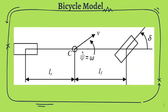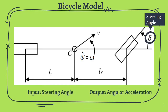This model depicts the most fundamental bicycle model. It makes many assumptions, with the two most important being that the model only moves in the xy plane, and that the steering angle delta is very small. This is a reasonable assumption since if one were to turn the steering wheel too sharply then the system would become automatically unstable. The input will be the steering angle, and the output will be the angular acceleration.